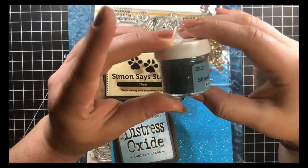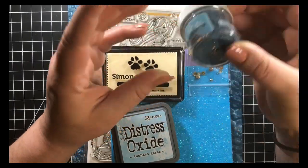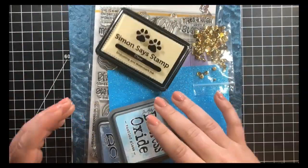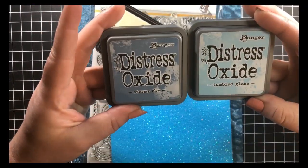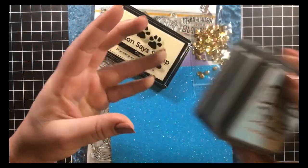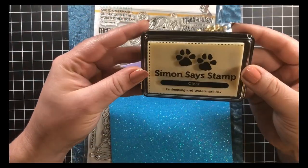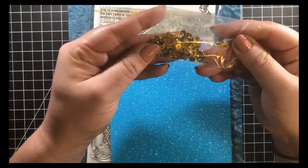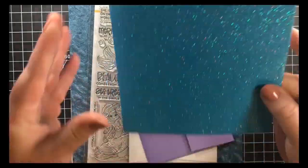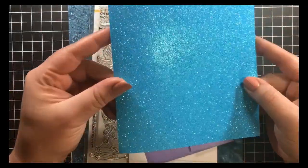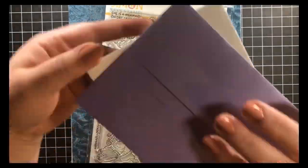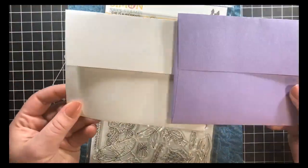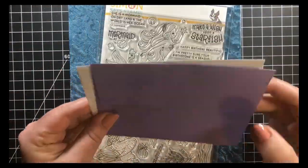The kit comes with a container of mermaid embossing powder by Simon, two Distress Oxide inks in Tumbled Glass and Stormy Sky, Simon Says Stamp clear embossing ink, some sequins, a piece of 6x6 glittered cardstock, and two envelopes in metallic lavender and metallic white. Of course, the stamp set.